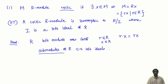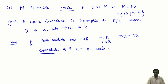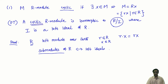Left ideals just mean they are an additive subgroup, and if you multiply them on the left by any element of the ring, it still belongs to the same left ideal. So submodules are the same as left ideals. What is being asked to prove is that if I take every possible left ideal of R and consider the quotient R mod I, this collection exhausts the possible cyclic R-modules up to isomorphism. Every cyclic R-module is isomorphic to a module of the form R mod I.